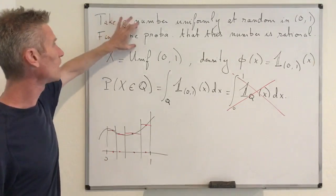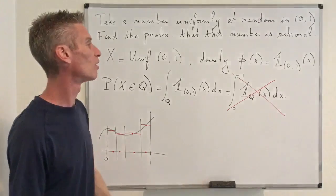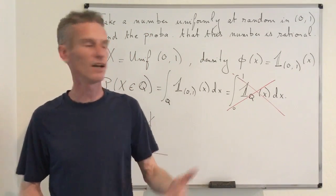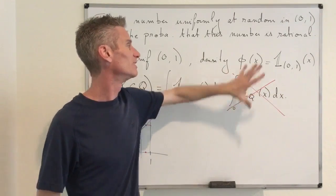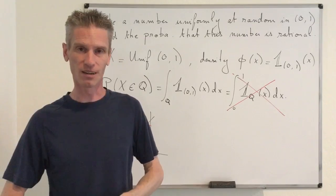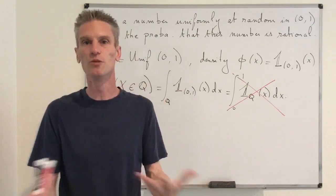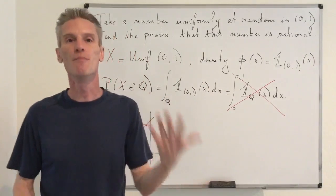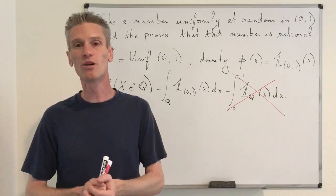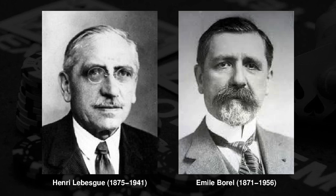That was a simple example showing the limitations of the Riemann integral. This problem appears throughout mathematics and especially in applied math, which is why many mathematicians tried to redefine the concept of integral. This motivates the next video in this playlist, which will be about measure-theoretic probability theory — redefining the basic concepts of probability using measure theory. It turns out that it was French mathematicians Henri Lebesgue and Émile Borel who produced the most successful definition, and that is what I'll discuss next.